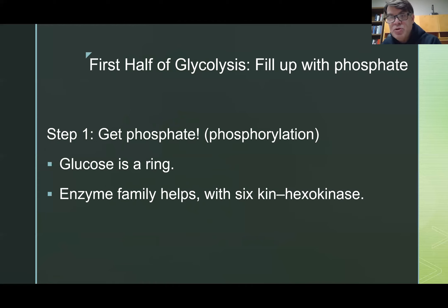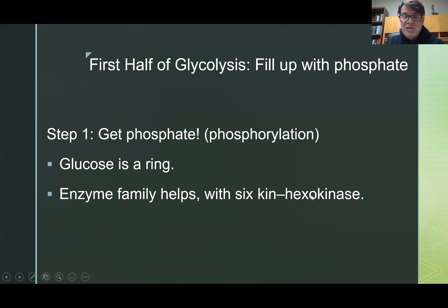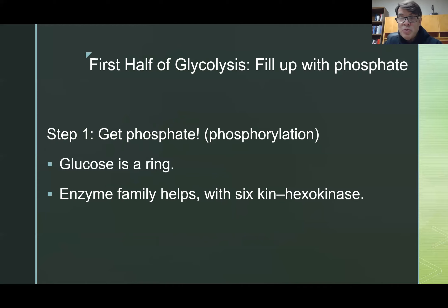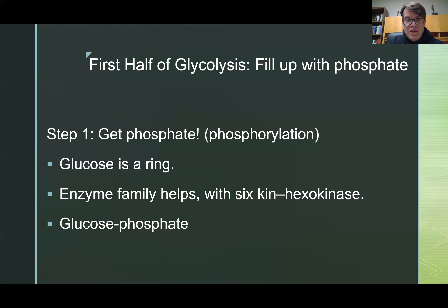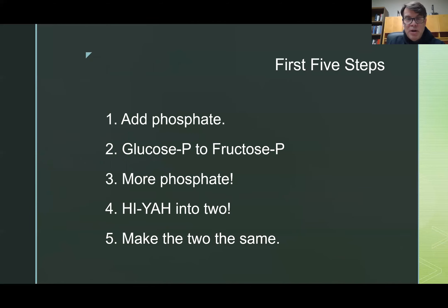Almost all of these steps involve some sort of enzyme. The first step involves an enzyme called hexokinase. Hex means six, so there are six kin in this enzyme family. I'm assuming your professor doesn't require you to know all the enzymes involved in this process. Step one: hexokinase helps the phosphate attach to the glucose, and we end up with glucose-6-phosphate at the end of step one.